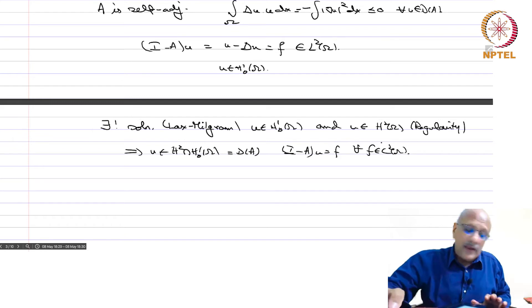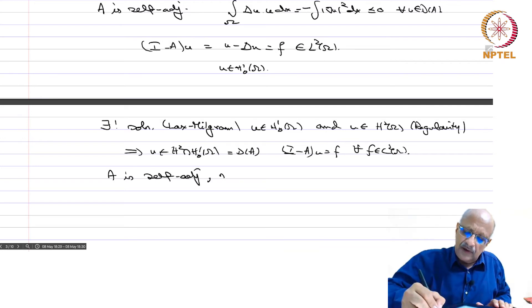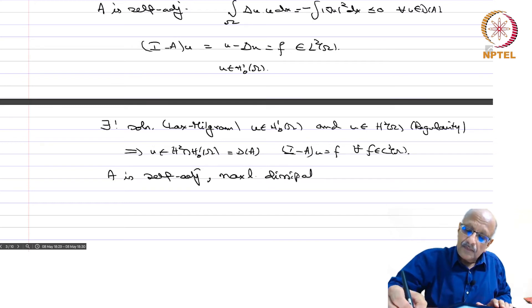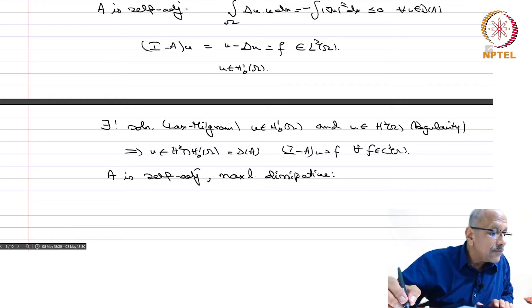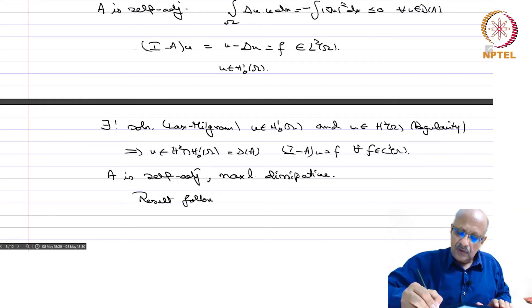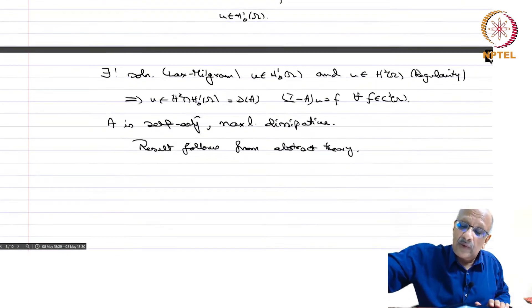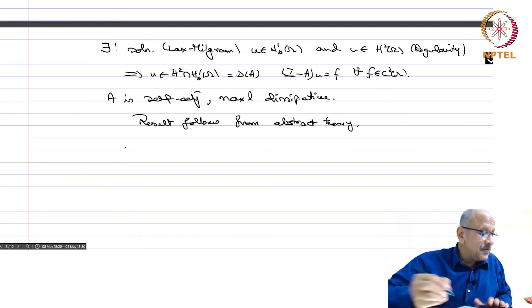Hence A is self-adjoint and maximal dissipative, and therefore the result follows from the abstract semigroup theory. For any u_0 in the space, we can solve the heat equation — we have seen this completely.